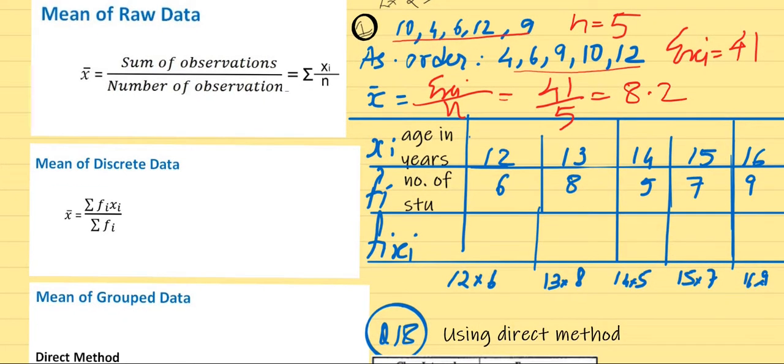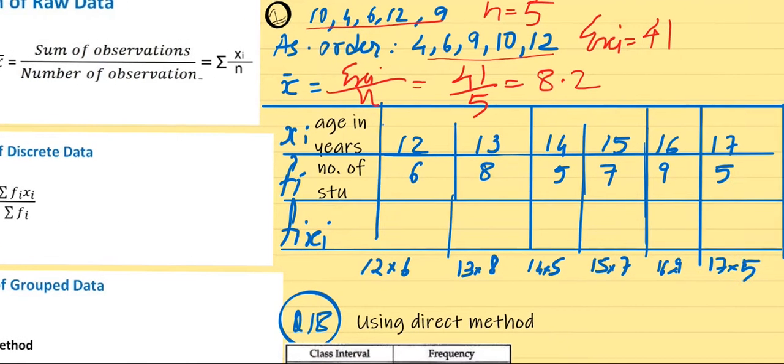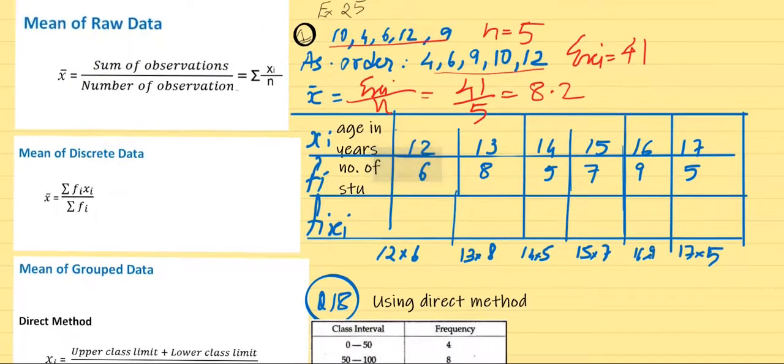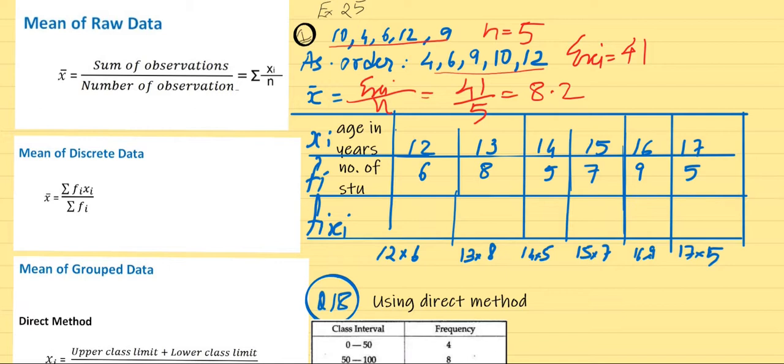Now, mean of discrete data. Discrete data means data that we have classified into groups with frequencies. In that case, the formula we will use is summation fi xi. See, here is my xi, and here is fi. For summation fi xi, I need to first do fi times xi.